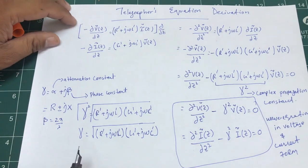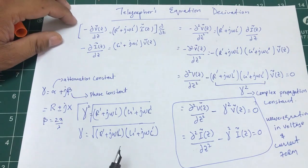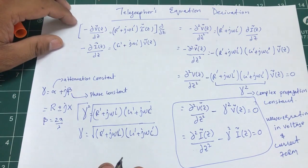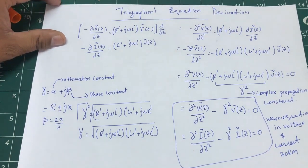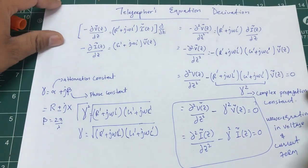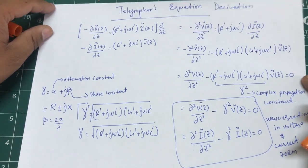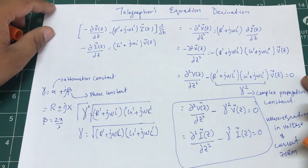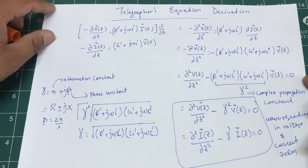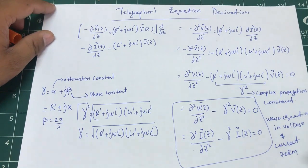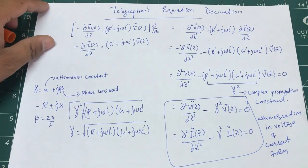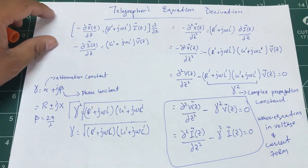We're going to manipulate this further and come up with definitions of the voltage reflection coefficient and SWR. I hope you liked this small tutorial on the telegrapher's equations in voltage and current form. If you have any questions, leave them in the comment section and don't forget to subscribe to my channel.